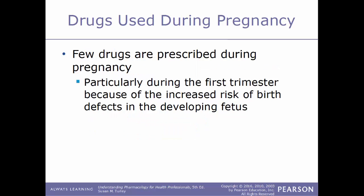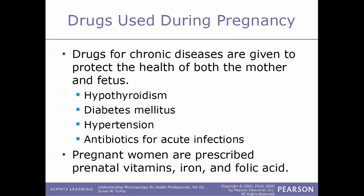Now we'll discuss drugs used during pregnancy. Very few drugs are prescribed during pregnancy, particularly during the first trimester, because of the increased risk of birth defects in the developing fetus. Drugs for chronic diseases are given to protect the health of both the mother and the fetus — these include drugs for chronic conditions such as hypothyroidism, diabetes mellitus, and hypertension, as well as antibiotics for acute infections. Pregnant women are also prescribed prenatal vitamins, iron, and folic acid.